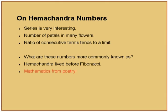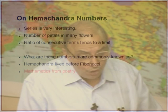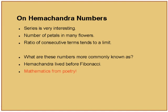The series is very interesting — it represents the number of petals in many flowers. If you see flowers in layers, the petal counts follow Fibonacci. The ratio of consecutive terms tends to the golden ratio. These numbers are more commonly known as Fibonacci numbers. And then to make the point, he says Hemchandra lived much before Fibonacci — mathematics from poetry — connecting mathematics to poetry and ultimately showing that maths is the basis of many of our algorithms.